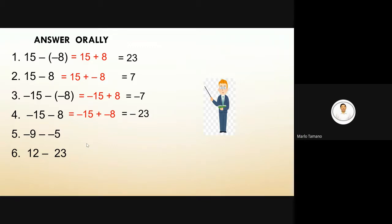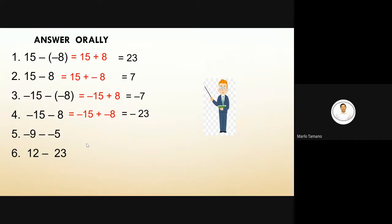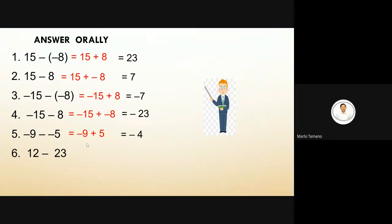Number five: negative 9 minus negative 5. The equivalent is negative 9 plus positive 5. The answer is negative 4.